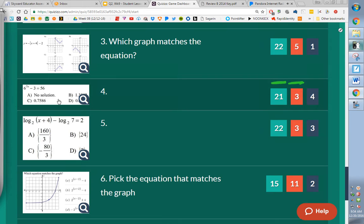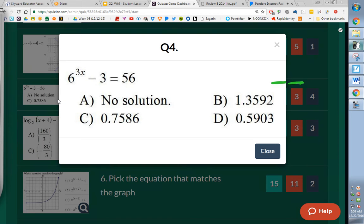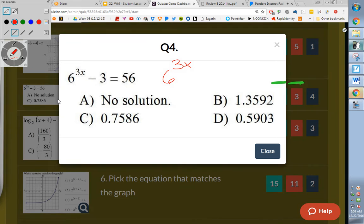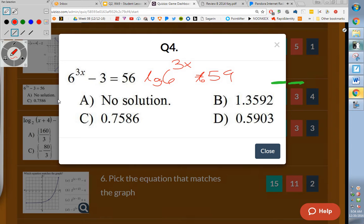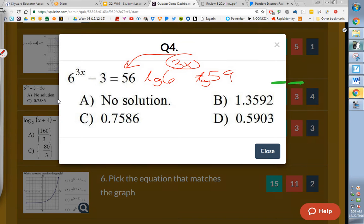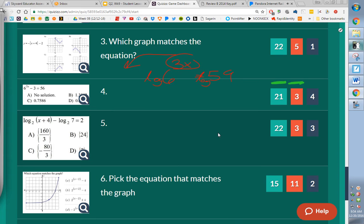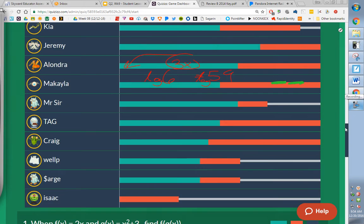Number four, good. We were good at number four. We just did it in bell work, so we shouldn't be bad. We added three first to get six to the 3x equals 59. Then what would we have to do at that point? Log it. Log a six, log a 59. That would fall down in front. Then it's just a matter of typing it into our calculator and going. But good. We did a good job on that one. I would have thought we would have done worse than that one.